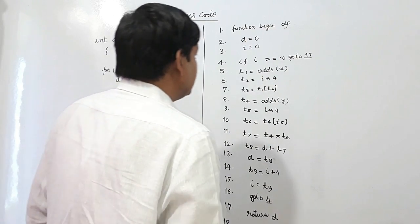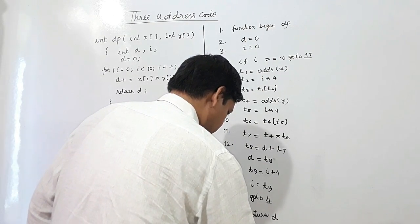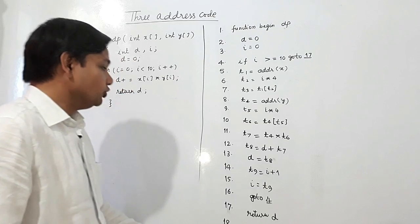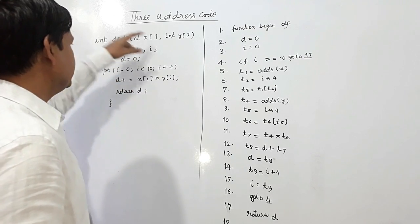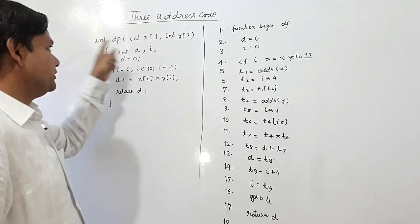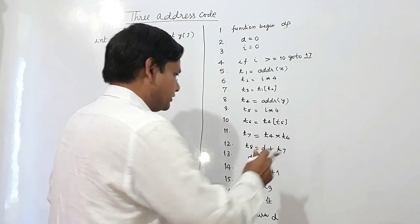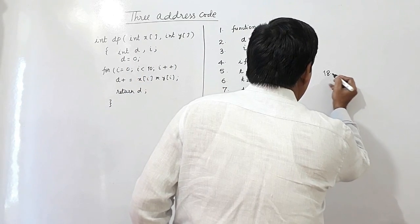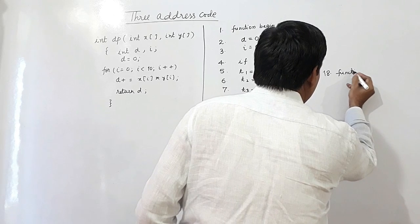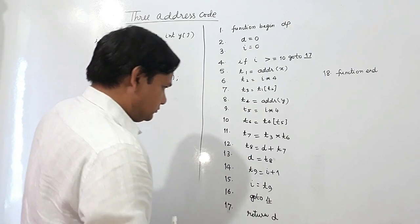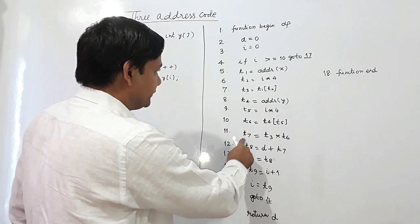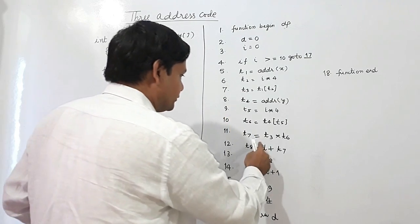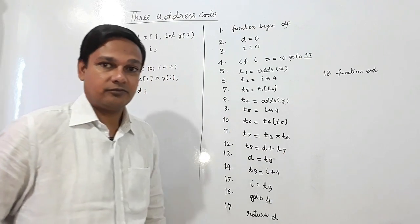At line number 18, function end dp. So this is the three address code for this function dp. Wait, at line number 11, this x[i] is stored in t3, so I will be multiplying t3 by t6.